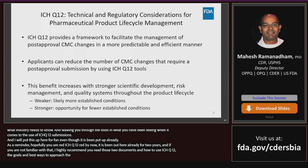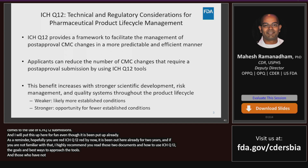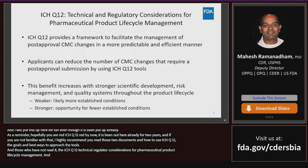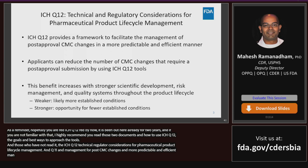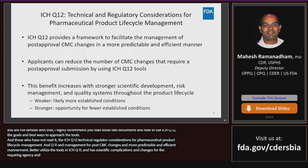ICH Q12 — Technical and Regulatory Considerations for Pharmaceutical Product Lifecycle Management — really utilizes all the best tools in Q8 through Q11 to provide a framework to facilitate the management of post-approval CMC changes in a more predictable and efficient manner. As applicants better utilize these tools, it provides the opportunity to present scientific justifications to reduce the volume of CMC changes requiring a filing to the agency, and to offer the opportunity to reduce the reporting categories that go along with it — overall, less things that need to be reported to the agency at a lower level if the tools are used correctly.